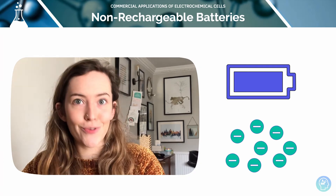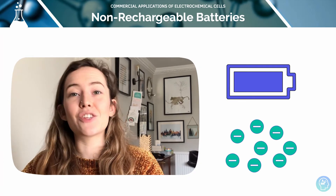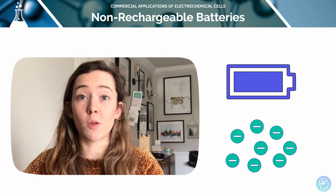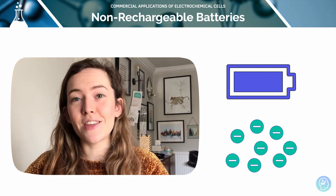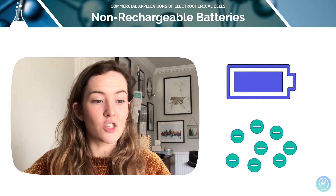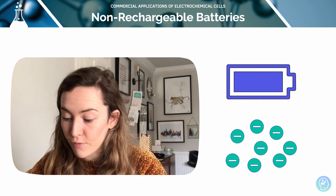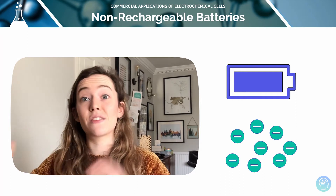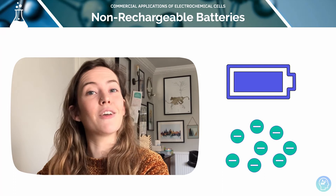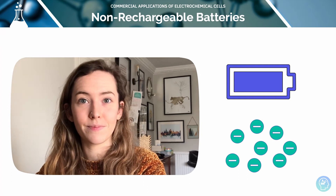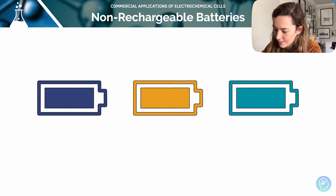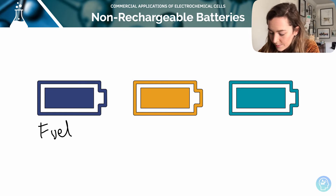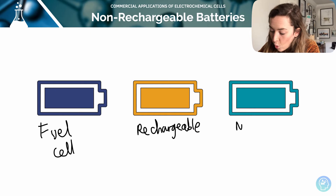Electrochemical cells are used in making batteries, and the overall EMF — the electromotive force, sometimes called the cell potential — gives an indication as to how effective that battery is. In batteries, electrons move from the oxidation, flow through an external circuit where they can do work and transfer energy. We've got three main types of cells: fuel cells, rechargeable, and non-rechargeable.